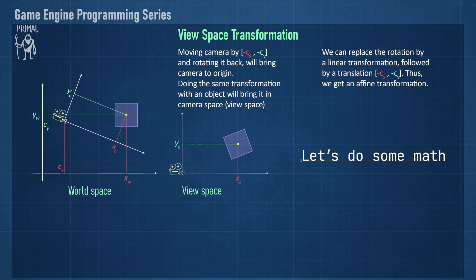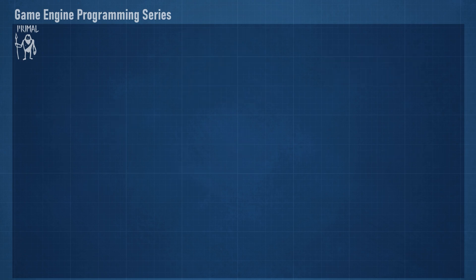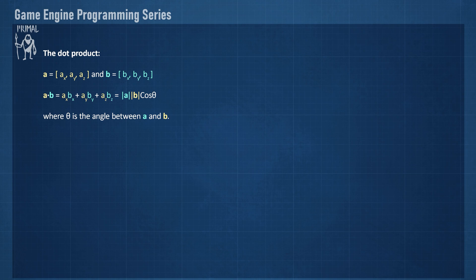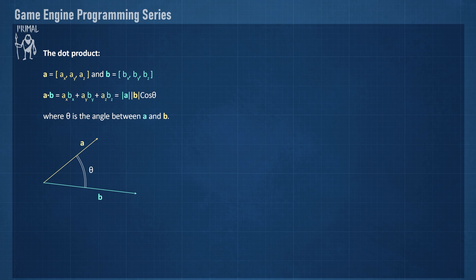But first, let's do some math. I'd like to have a quick refresher on the dot product, cross product, and matrix multiplication, since those are the operations that we are going to use a lot. Starting with the dot product of two vectors, which is defined as the sum of the products of the corresponding components of the two vectors. This operation is defined for any two vectors as long as both vectors have the same number of dimensions. The result of the dot product is always a single number, and that's why it's also called a scalar product. A rather useful property of the dot product is that the resulting number is proportional to the cosine of the angle between the two vectors.